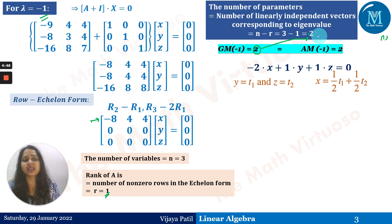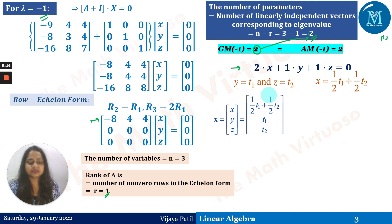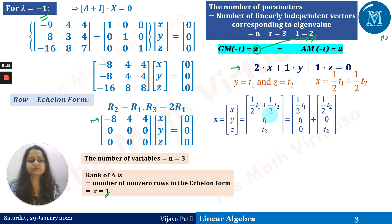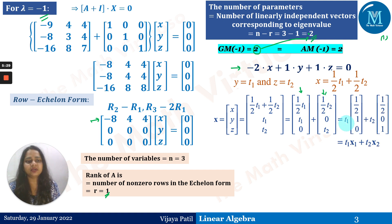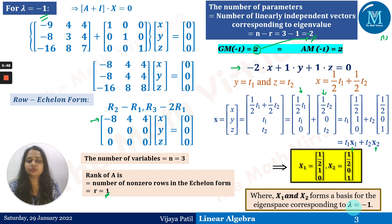From the one equation we have, with two free parameters, we assume y = t₁ and z = t₂. Substituting into the equation, we get x = (1/2)t₁ + (1/2)t₂. Separating into t₁ and t₂ components, the eigenvectors are X₁ = [1/2, 1, 0] and X₂ = [1/2, 0, 1], which form the basis for the eigenspace corresponding to λ = −1.